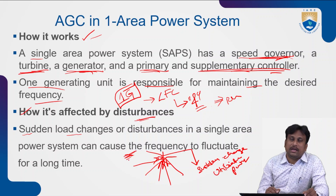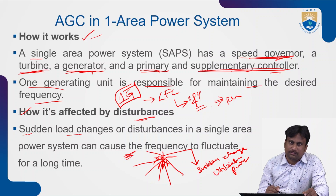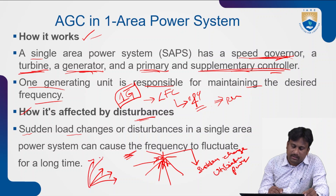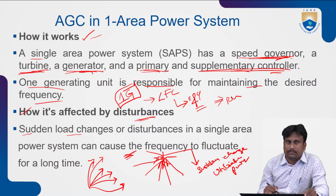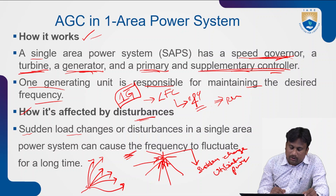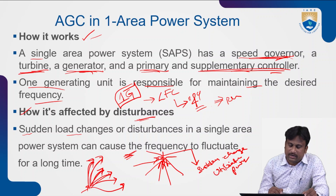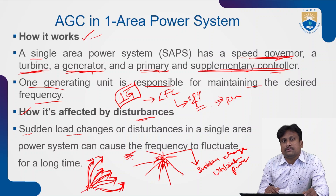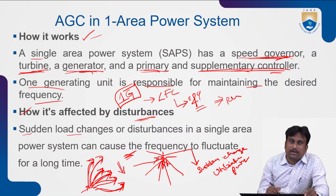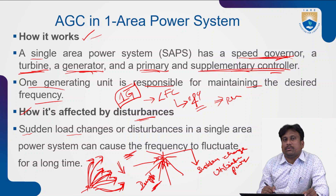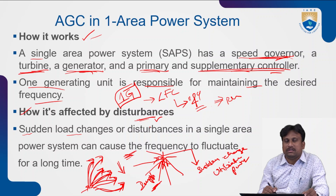Nowadays all loads do not operate on the same periodic aspect. New loads are increasing day by day, and power consumption is increasing more and more. A single load cannot operate throughout the day, so multiple loads interconnect together and make operations. Due to this, the load demand becomes imbalanced when it tries to reach the required level, causing disturbances throughout the entire power system.